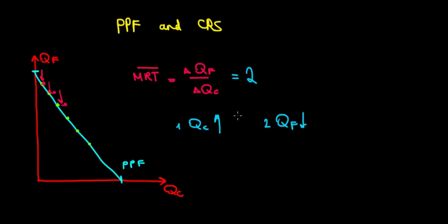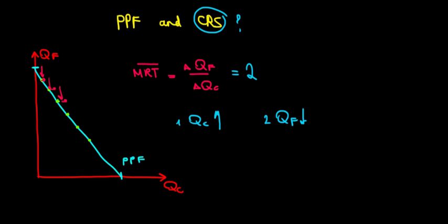Now why is this the case? What is the relationship with the constant returns to scale here? Recall that when we have constant returns to scale, the growth in output, the growth in production is going to be the same as the growth in input. So to increase production, to move along the curve.